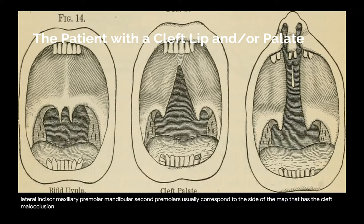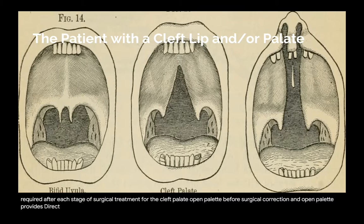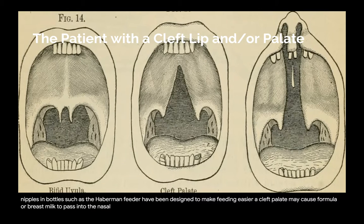Malocclusion: a high percentage of patients with cleft lip and palate require orthodontic care. Orthodontic treatment may be required after each stage of surgical treatment for the cleft palate. Open palate: before surgical correction, an open palate provides direct communication with the nasal cavity. A cleft makes it more difficult for a child to suck on a nipple. Special nipples and bottles such as the Haberman feeder have been designed to make feeding easier. A cleft palate may cause formula or breast milk to pass into the nasal cavity, and a prosthetic palatal obturator may be constructed to aid during drinking and eating.